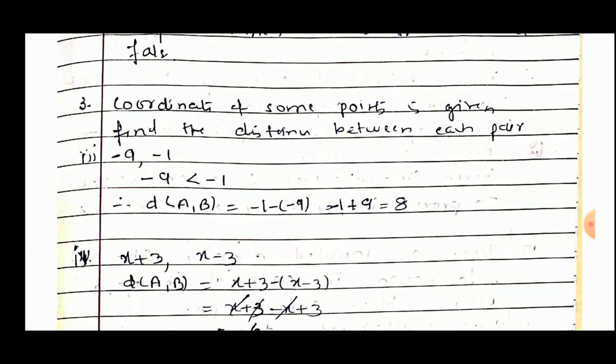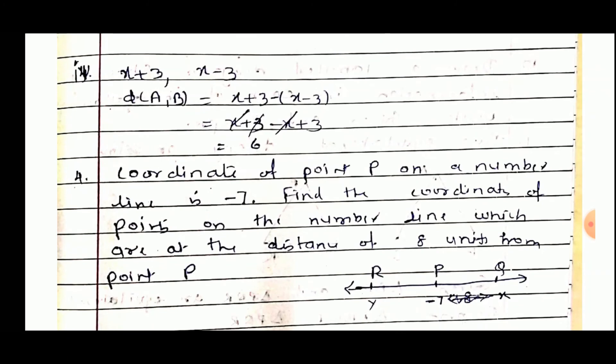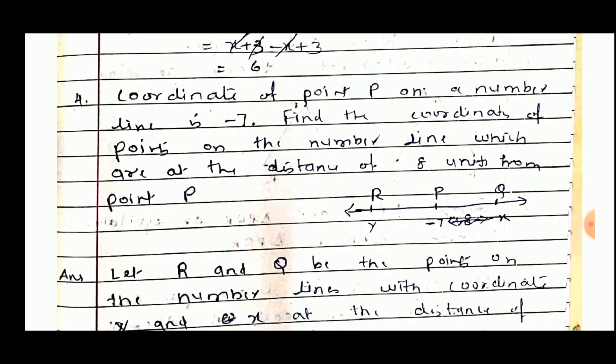Coordinates of some points are given — find the distance between each pair. First pair: minus 9 and minus 1. Since minus 9 is less than minus 1, distance AB equals minus 1 minus (minus 9), that is minus 1 plus 9, equal to 8. Second pair: x plus 3 and x minus 3. Distance AB equals (x plus 3) minus (x minus 3), which equals x plus 3 minus x plus 3; the x terms cancel, giving 6.